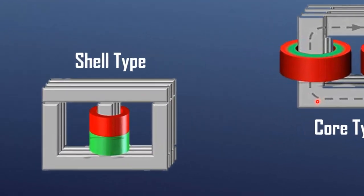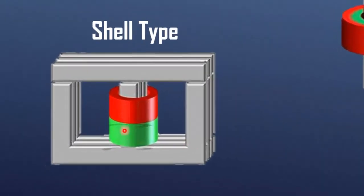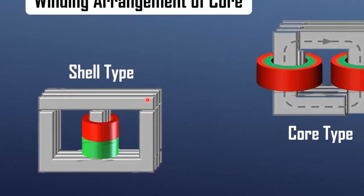In a shell-type transformer, the windings are placed around the central limb of a three-limb core, and the magnetic flux is confined within the two outer limbs.